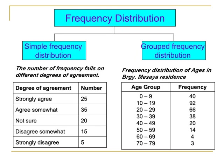Frequency distribution can be classified into two: the simple frequency distribution and the grouped frequency distribution. The simple frequency distribution is a tabular presentation of categorical data. The grouped frequency distribution is a tabular presentation of quantitative or numerical data — for example, the distribution of age in Barangay Masaya residents, since age is numerical or quantitative data.